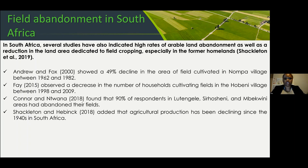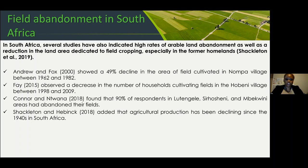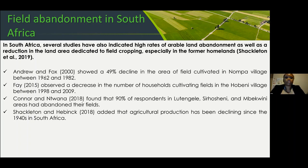Angry and Fox in a study conducted in 2000 showed a 49 percent decline in the area of fields cultivated in Nonpal village. Say in 2015 also observed a decrease in the number of households cultivating fields in Hobenu village. Kono and Prana in 2018 found that 90 percent of respondents in three villages — Luelue, Tengeles Hotline, and Bikini areas — had also abandoned their fields. Shackleton and Hebick added that agricultural production has been declining in South Africa since the 1940s.